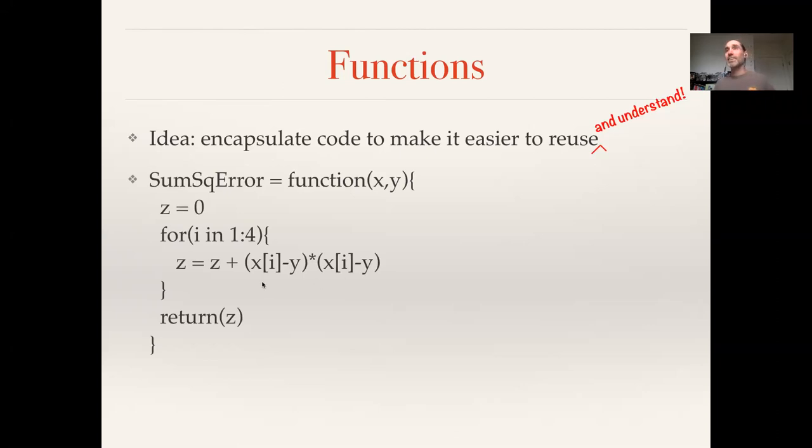So for a simple example, in the last video we learned about what a for loop was and we wrote some code that would go through and calculate a sum of squares. Here what I can do is now take that concept of code that calculates the sum of squares and encapsulate that in a function. I want to think about in the general case I would want to be able to do this calculation for any x and for any y.